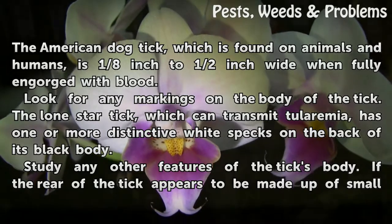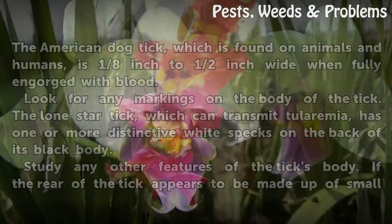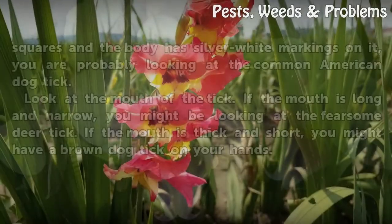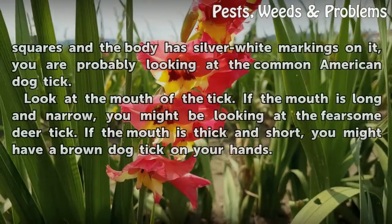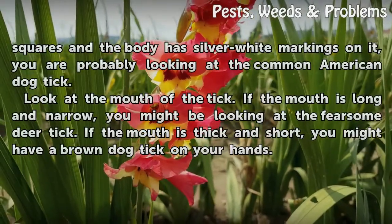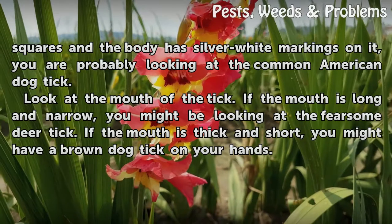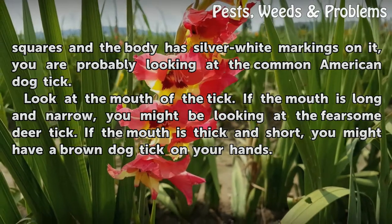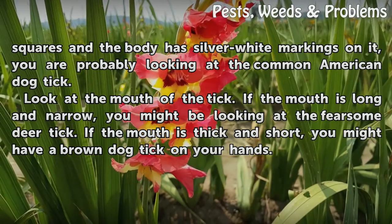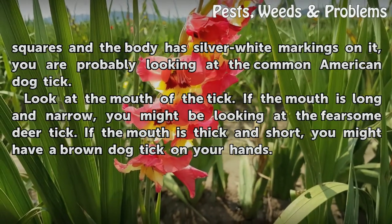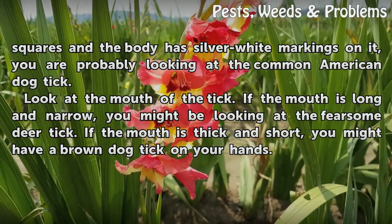Study any other features of the tick's body. If the rear of the tick appears to be made up of small squares and the body has silver-white markings on it, you are probably looking at the common American dog tick.